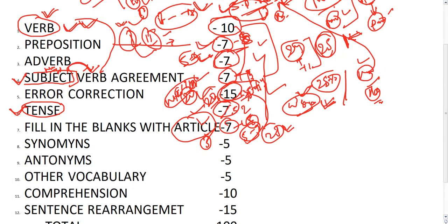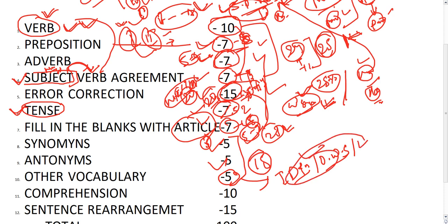Articles rules are straightforward - just continue practicing. From vocabulary section, you can get 15 marks total: five marks from synonyms, five marks from antonyms, and five marks from other vocabulary like one-word substitution and phrases.